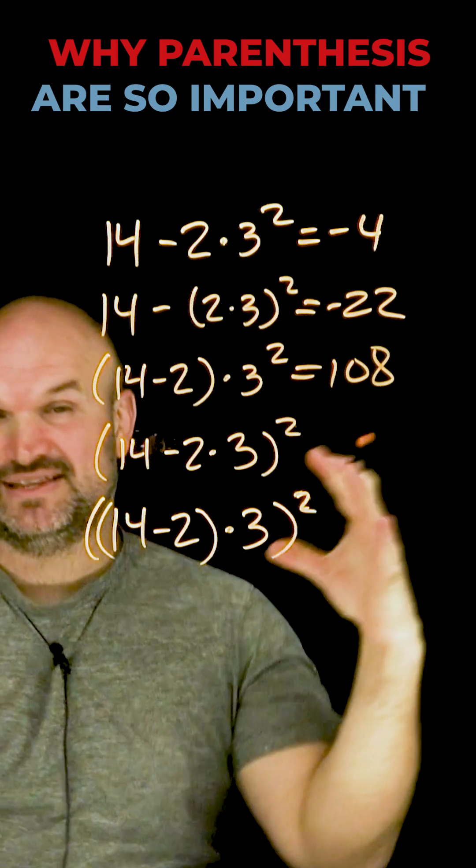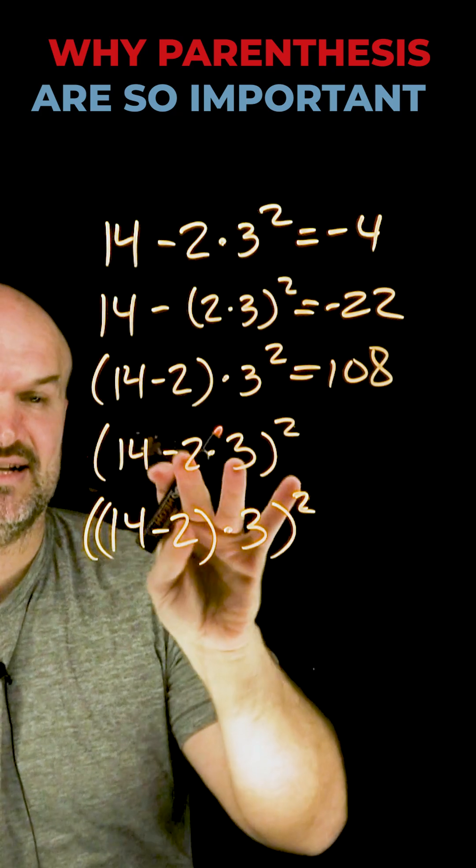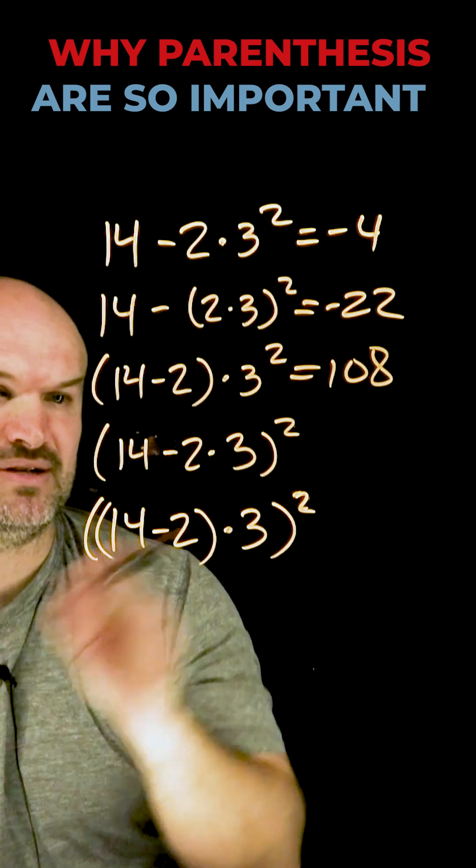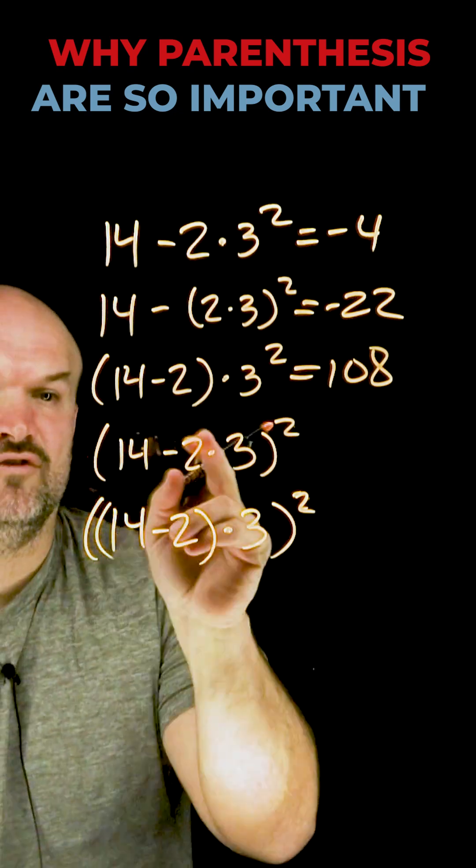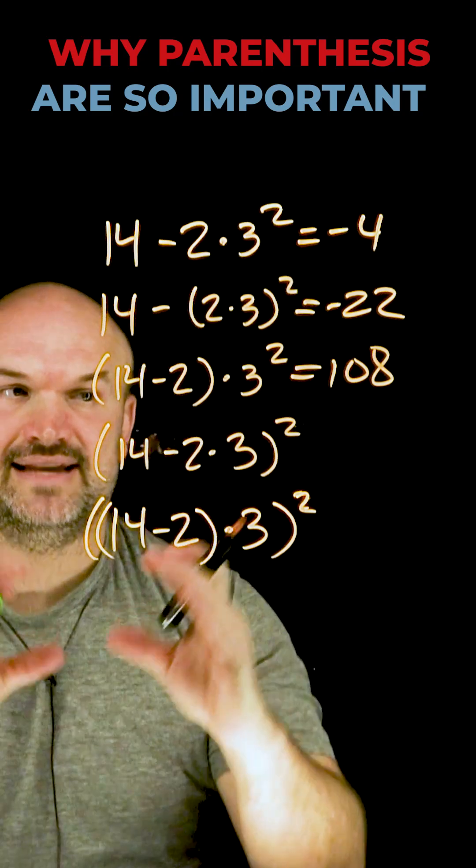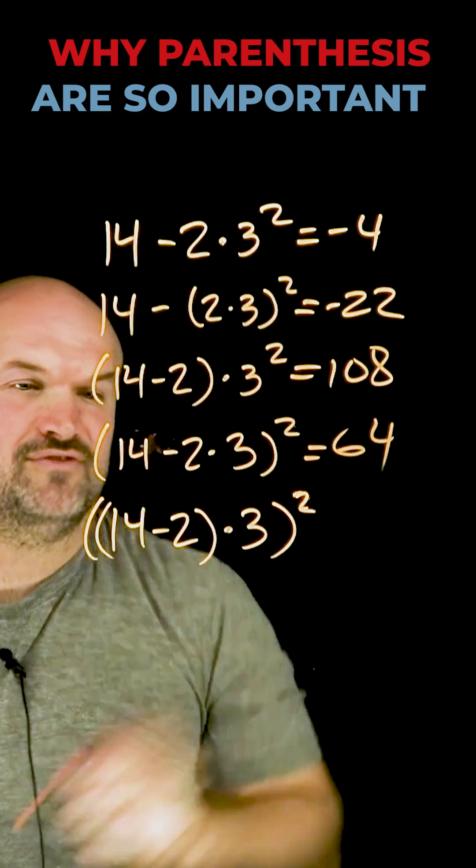Over here, I have everything inside the parentheses I need to simplify before squaring. But again, I need to follow my order of operations inside the parentheses. Make sure you multiply before subtracting. Two times three is six. 14 minus six is eight. Now I can square it, and eight squared equals 64.